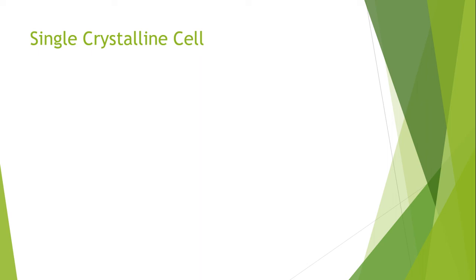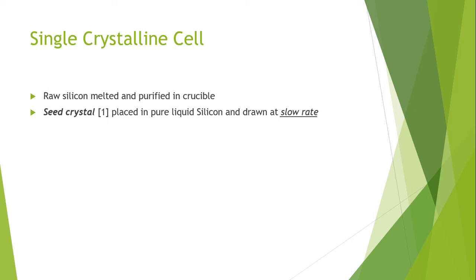Because of the careful and slow manufacturing process, it is a more expensive type of silicon. First, raw silicon is melted and purified in a crucible.